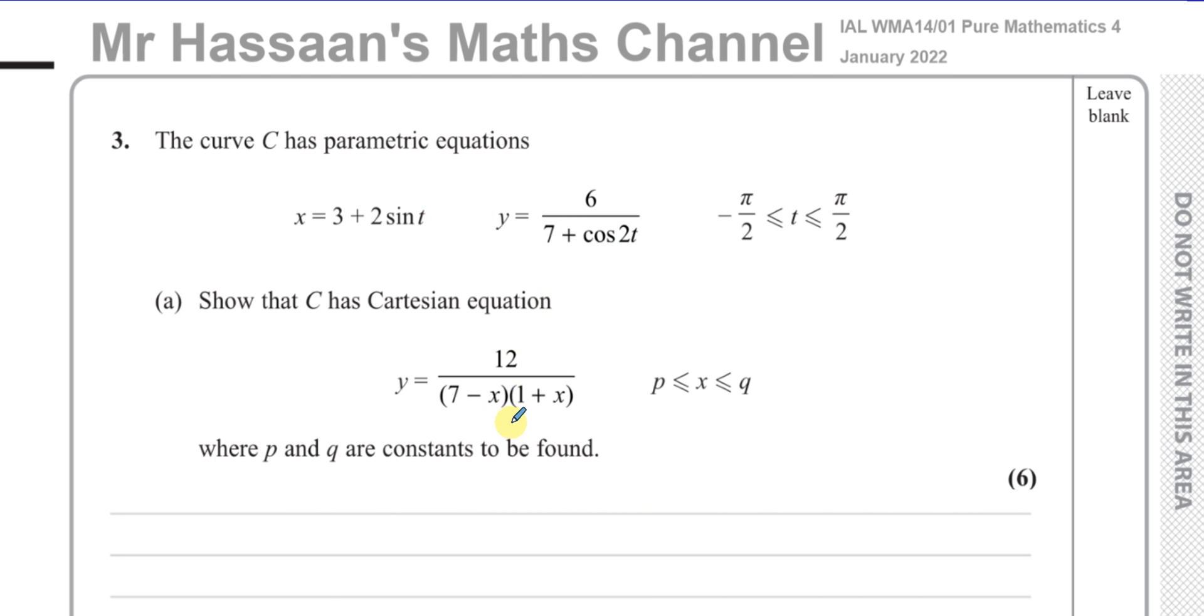So we have to rewrite this in this form, and with Cartesian equations being formed from parametric equations which have trig functions in them, one of the methods that we should use is to use identities. So I see that X is equal to 3 plus 2 sine T, and Y is equal to 6 over 7 plus cosine 2T.